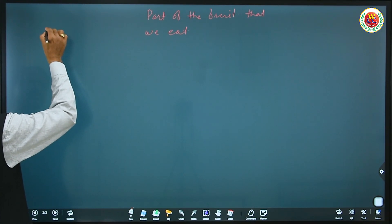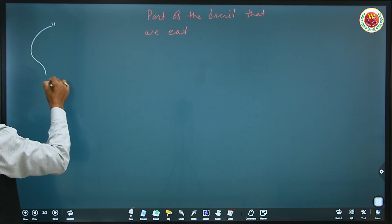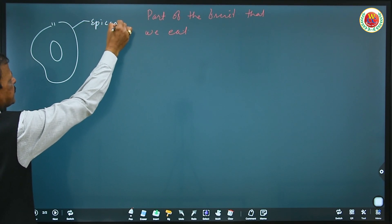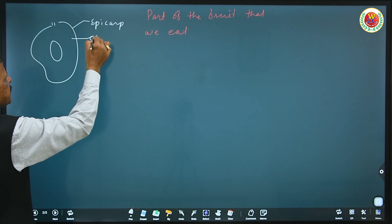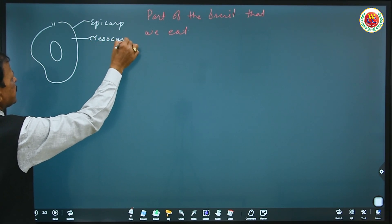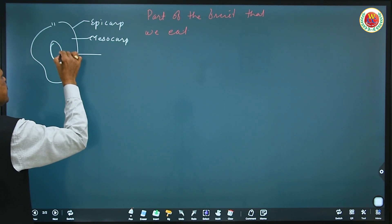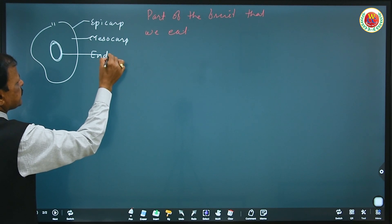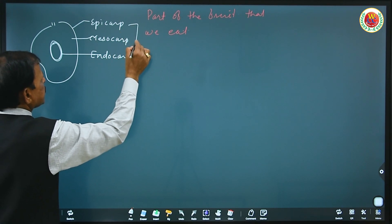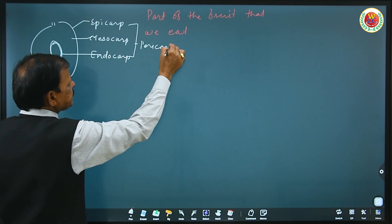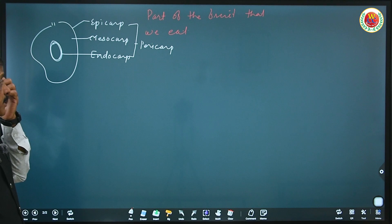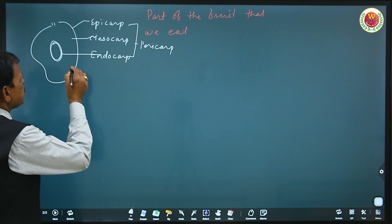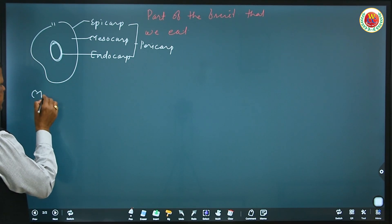The part of the fruit that we eat can be asked in examination. It is very important to understand. Take the typical example of mango — it has epicarp as a protective covering, then mesocarp, and the hard coat around the seed is called endocarp. Together these three parts are called pericarp. This is an introduction to the different parts of the fruit.